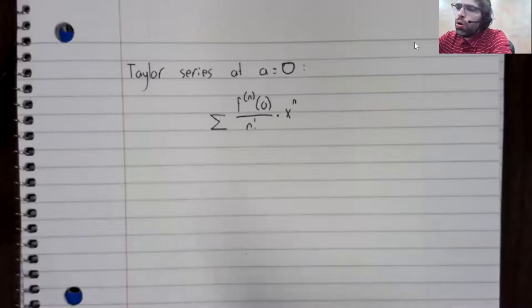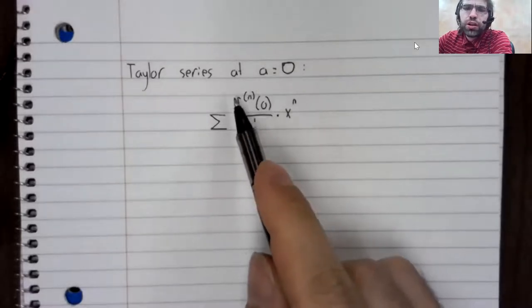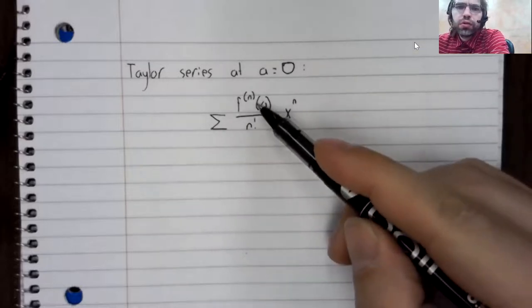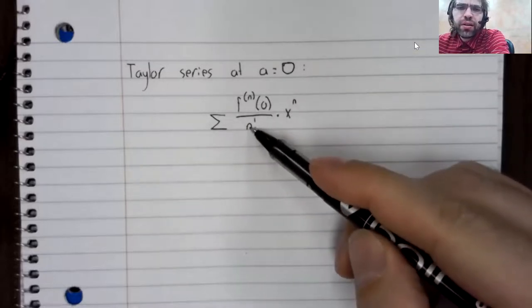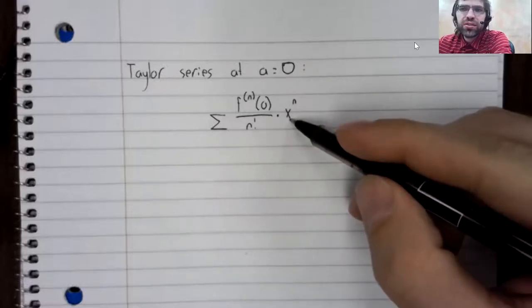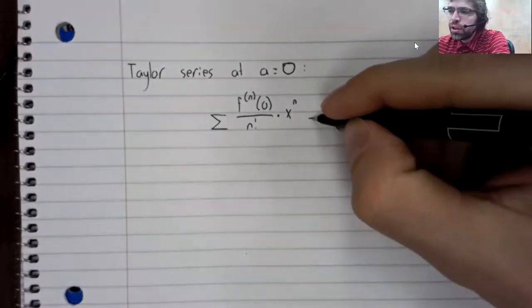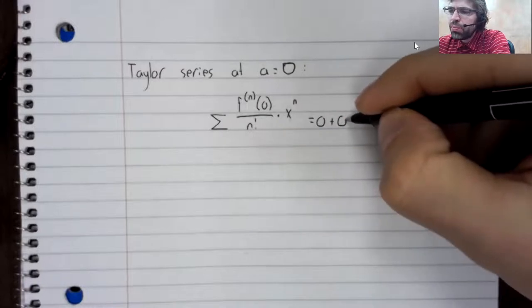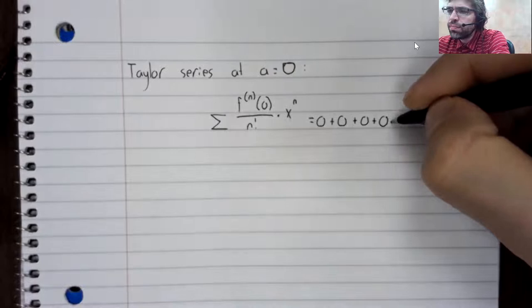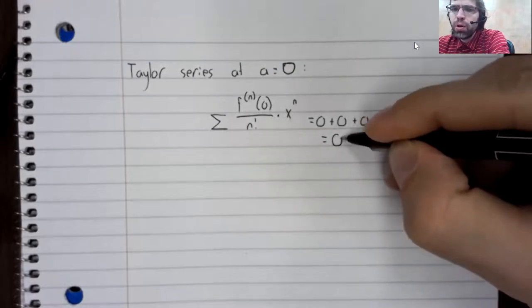So all of the terms in this Taylor series are 0. 0 divided by anything is still 0. 0 times x to the n is 0. So we're adding a bunch of 0s together. And this equals 0.